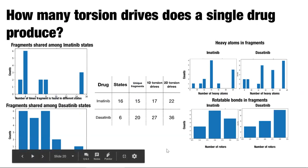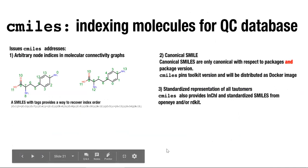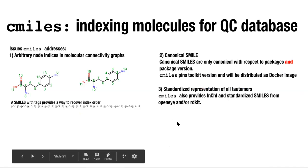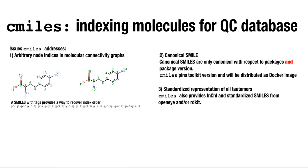Now that we're generating all these fragments and running torsion drives, we need a way to store the data and make it reusable for the entire community. Daniel Smith will speak about the QC Archive project. For the database, we need a way to index these molecules usable for both open force field cheminformatics and the QM community.